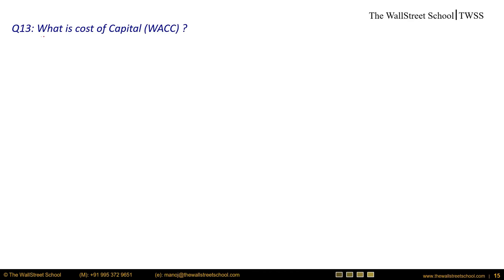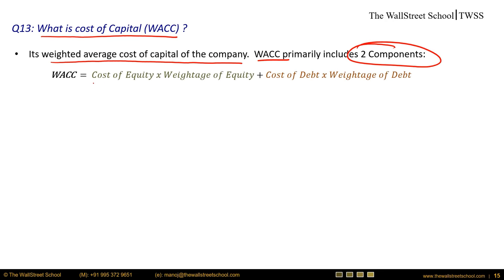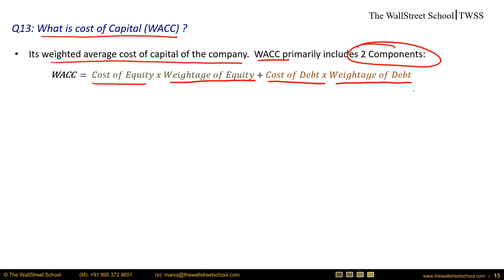Question 13: what is WACC — weighted average cost of capital? WACC primarily includes two components: cost of equity multiplied by the weightage of equity, plus cost of debt multiplied by the weightage of debt. If a company uses additional sources of capital such as preferential capital, those are added to the equation as well.